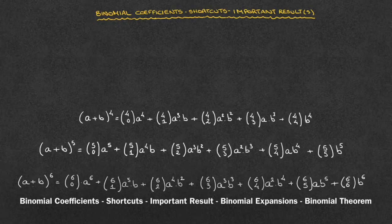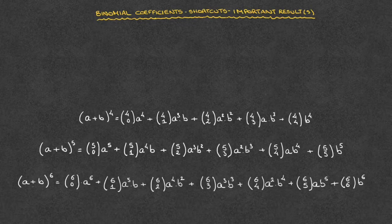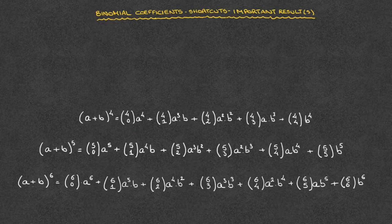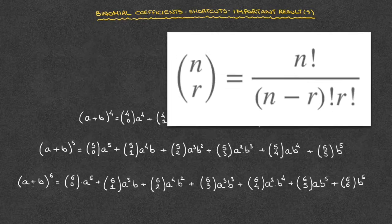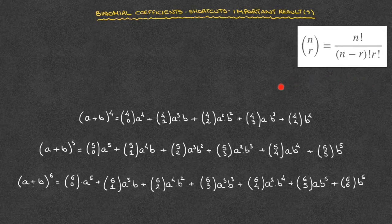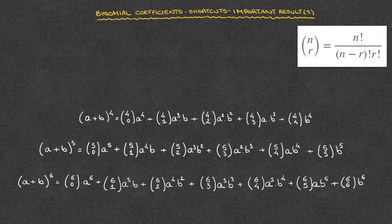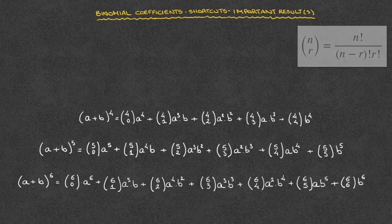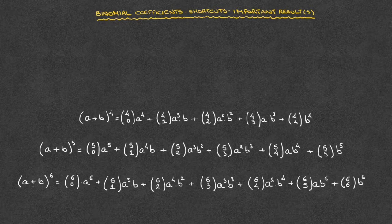In this second tutorial on binomial coefficients we're going to learn about an important result which will allow us to find the values of the binomial coefficients much faster. We can see in the lower half of the screen that I have three binomial expansions, and in just a minute we'll see how to quickly evaluate each of the binomial coefficients. In our previous tutorial we learned how to calculate binomial coefficients using the formula in the upper right-hand corner of the screen. Throughout this tutorial I'm assuming you're comfortable calculating binomial coefficients — if not, I'd strongly suggest watching that tutorial first.